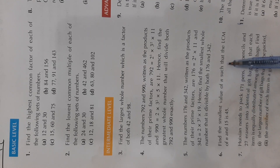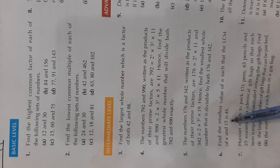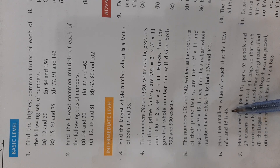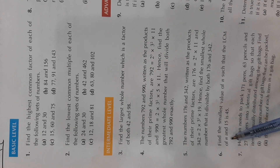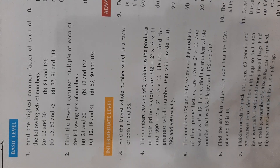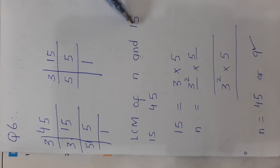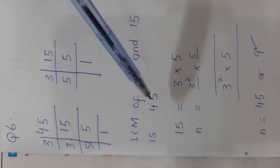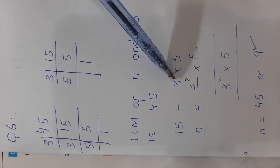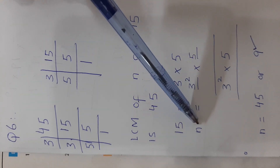Question number 6: find the smallest value of n such that the LCM of n and 15 is 45. Since LCM of n and 15 is 45, write down 15 as a product of its prime factors. 15 = 3 × 5. n is unknown.